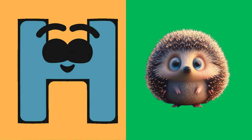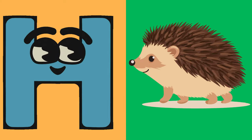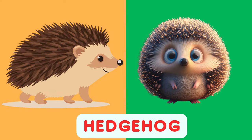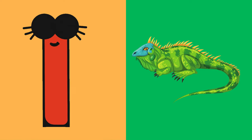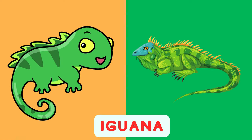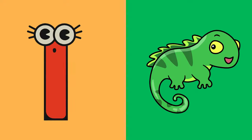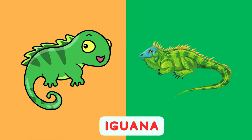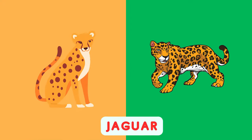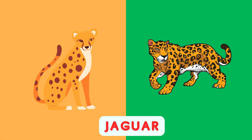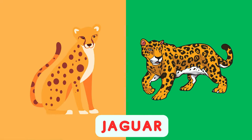H is for Hedgehog, H, Hedgehog. H is for Hedgehog, H, H, H. I is for Iguana, I, I, Iguana. I is for Iguana, I, I, I. J is for Jaguar, J, J, Jaguar. J is for Jaguar, J, J, J.